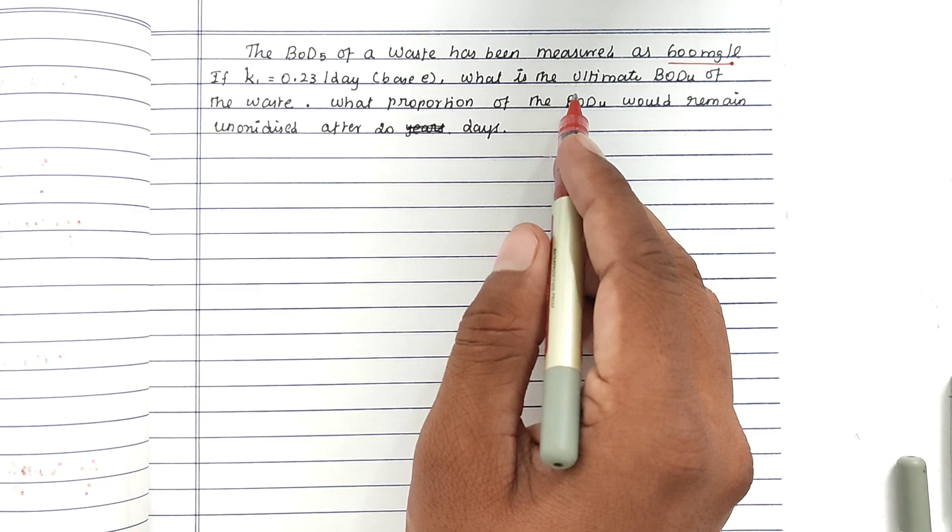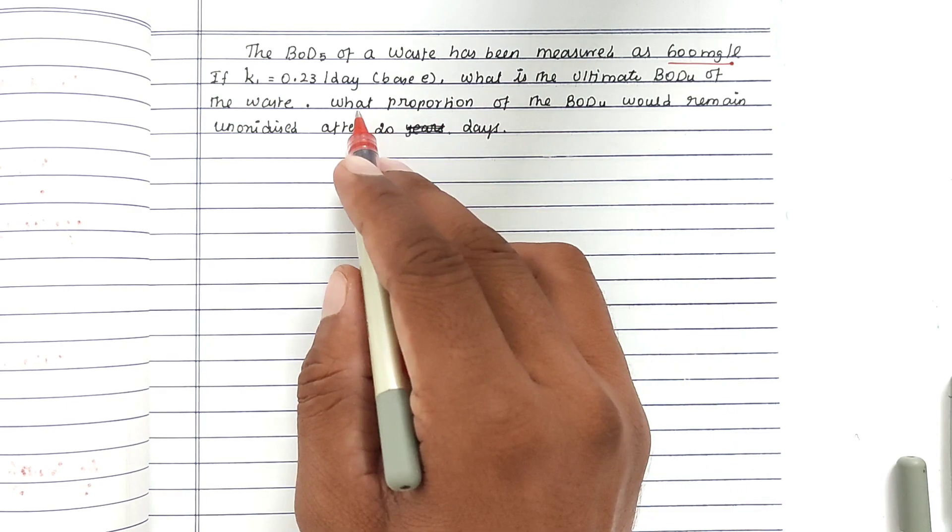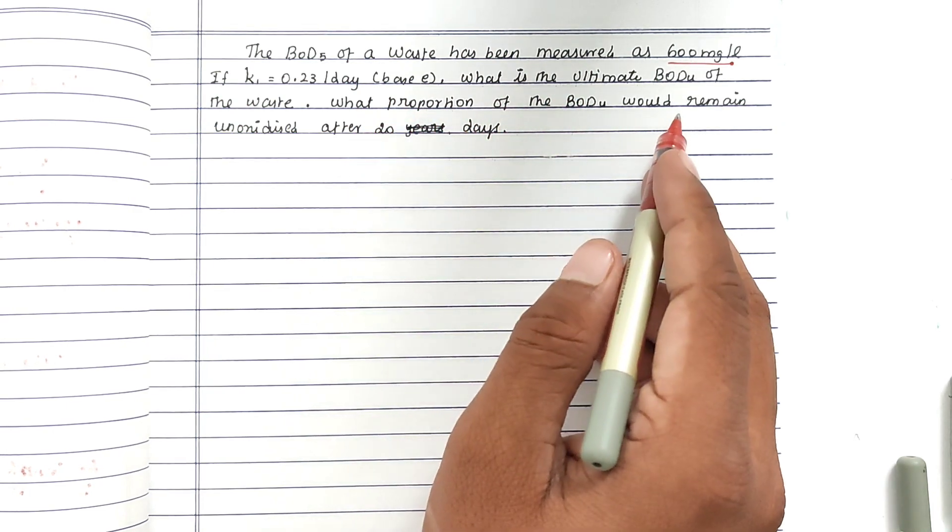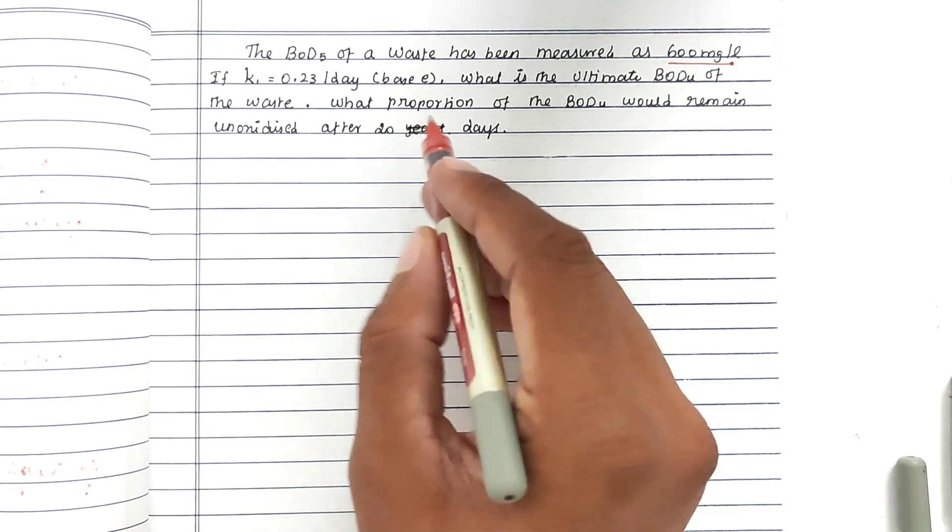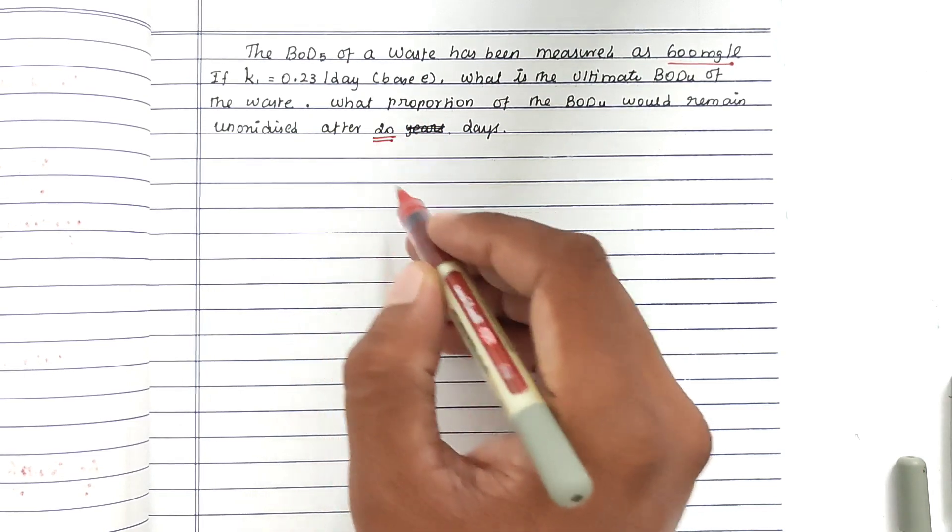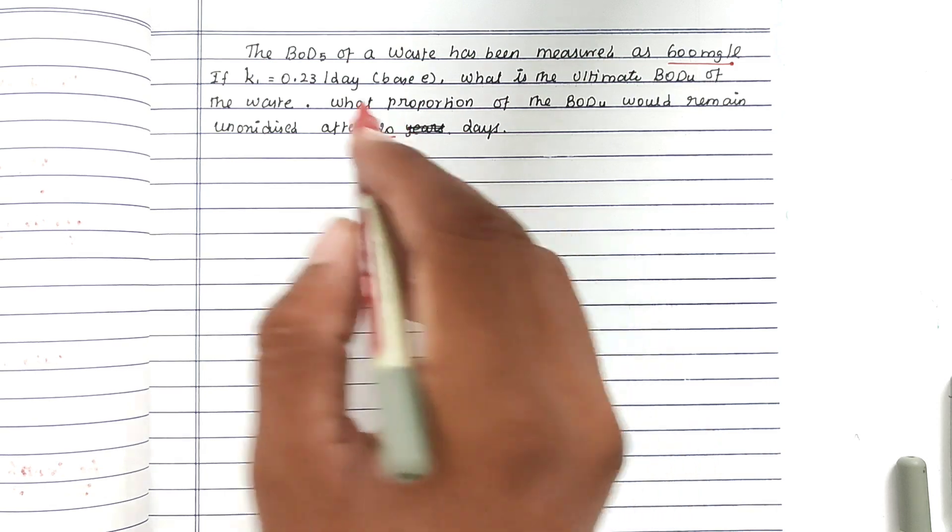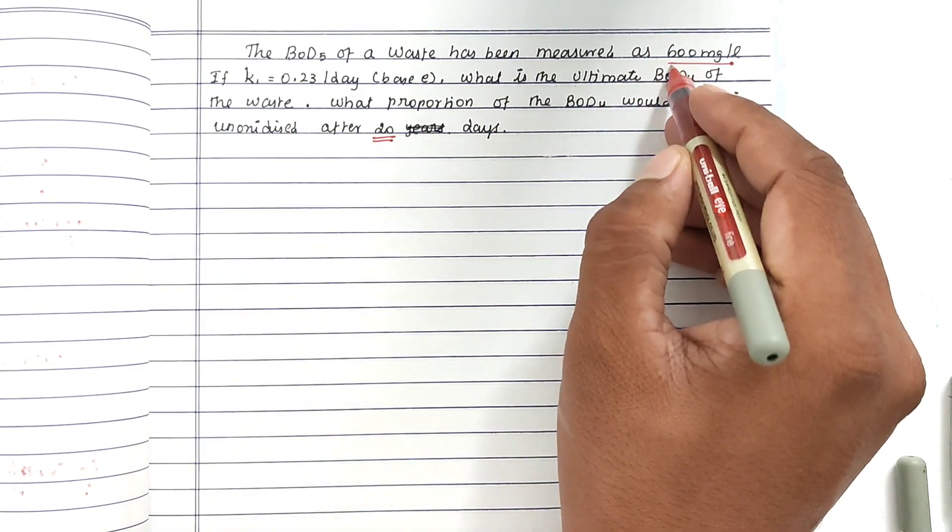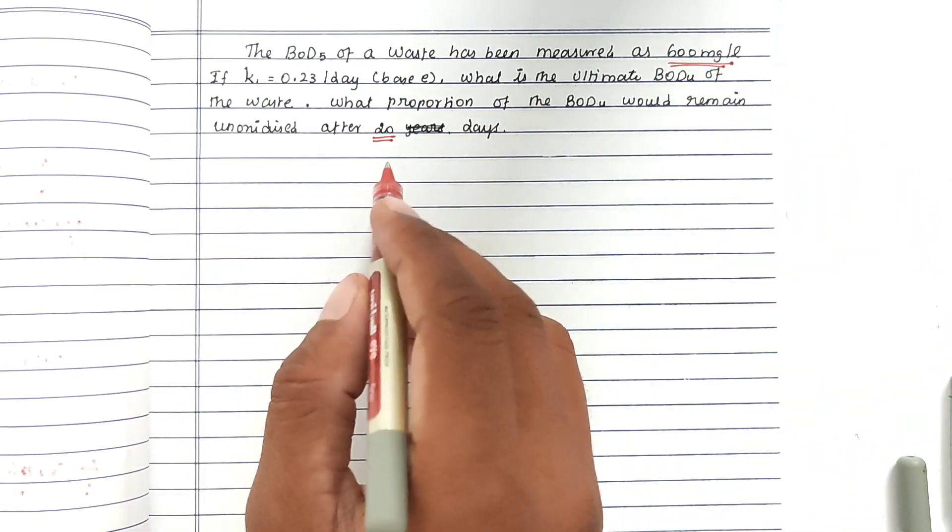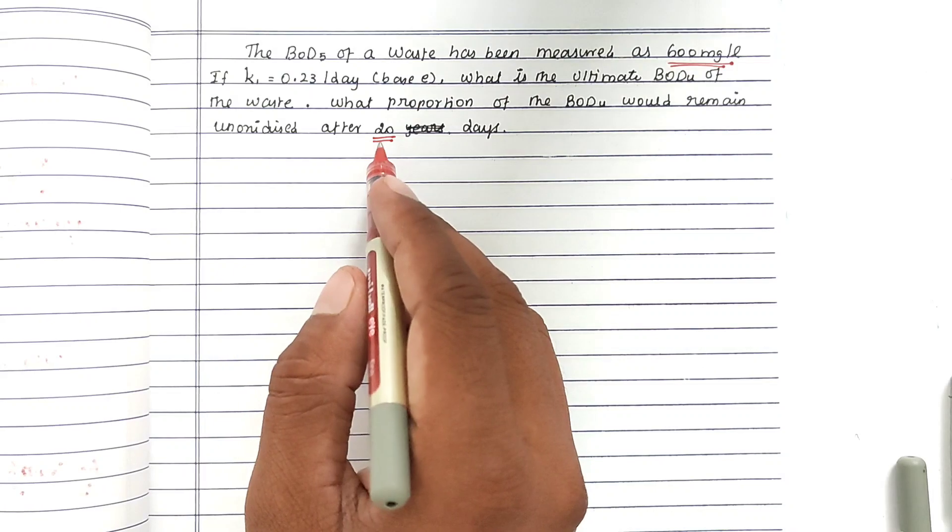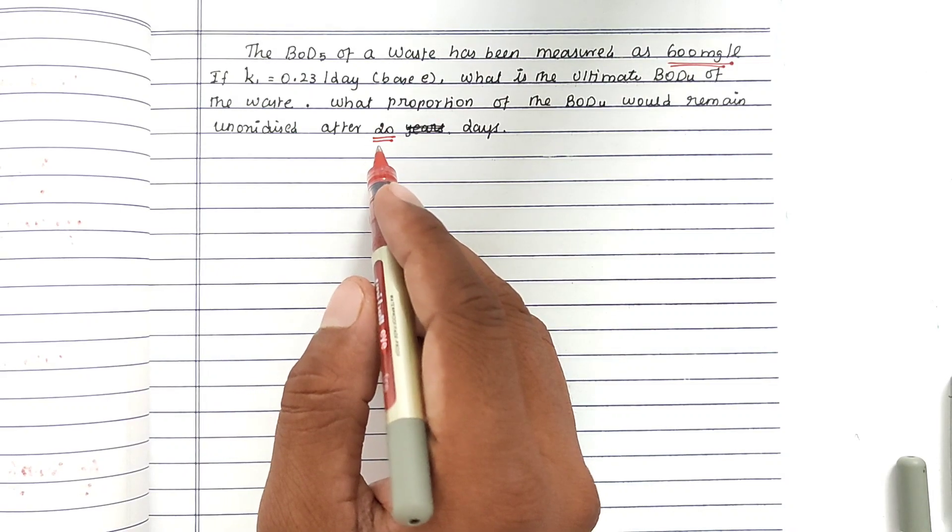We have to find out the L value. Next, what proportion of BOD would remain unoxidized after 20 days? For 5 days it will be 600 milligrams per liter. What is the unoxidized BOD after 20 days?